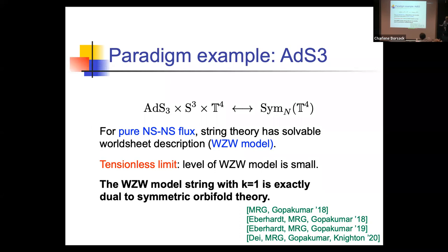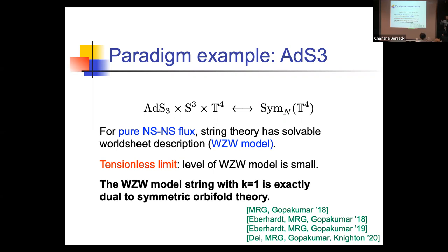One could hope that among these WZW models, with their free parameters, you find a specific point corresponding exactly to the symmetric orbifold of T4. There is a natural argument telling you where to look: the symmetric orbifold has a gigantic higher spin symmetry, which should be present on the bulk side too. Since this is the analog of free super Yang-Mills, it should be at the tensionless limit, meaning the level should take the smallest possible value — level one.